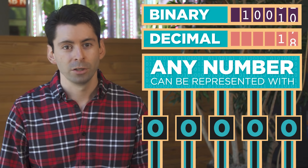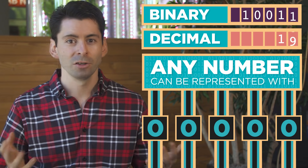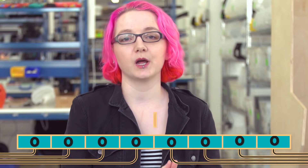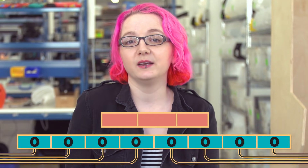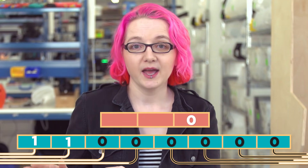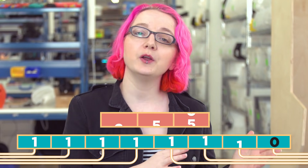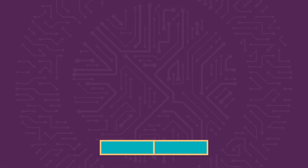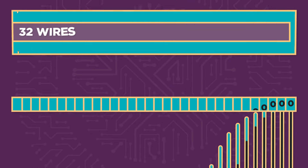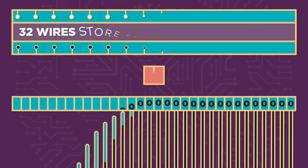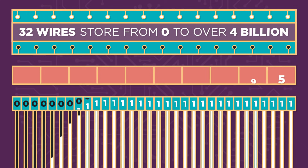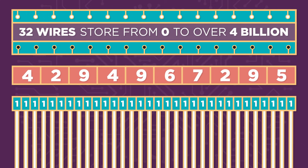The more wires you use, the larger the numbers you can store. With eight wires, you can store numbers between zero and two hundred and fifty-five — that's eight ones. With just thirty-two wires, you can store all the way from zero to over four billion.